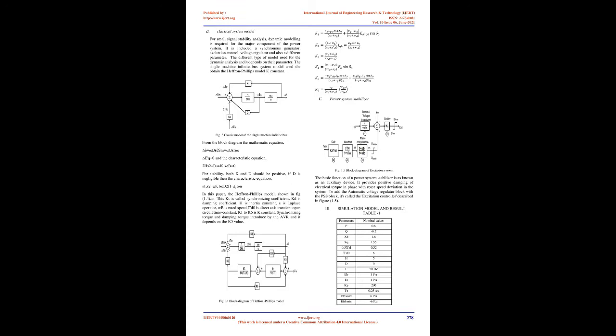The single machine infinite bus system model is used to obtain the Heffron-Phillips model K constants: K1 = (expression involving cos δ0 and sin δ0), K2, K3, K4, K5, K6. From the block diagram, the mathematical equations are: Δω_b = s·Δδ, Δs·Eq' = 0, and the characteristic equation: 2H·s² + D·s + K1·ωb = 0.